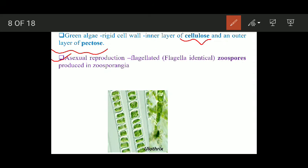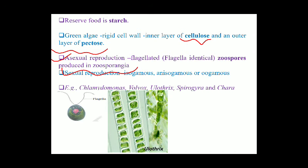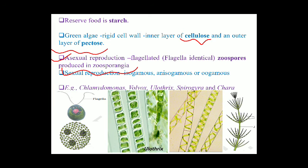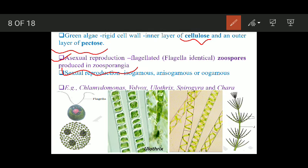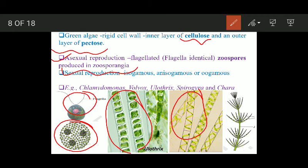Asexual reproduction in green algae takes place by flagellated zoospores, which are produced in zoosporangia. Sexual reproduction is isogamous, anisogamous, or oogamous. Examples of algae in this group include Chlamydomonas, Volvox, Ulothrix, Spirogyra, and Chara.